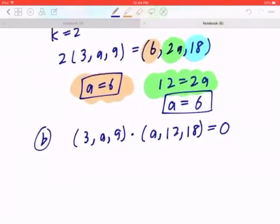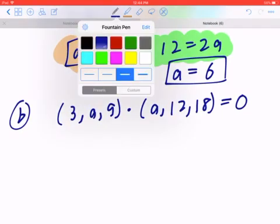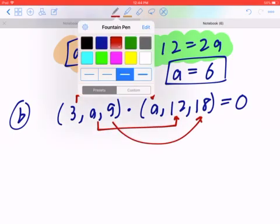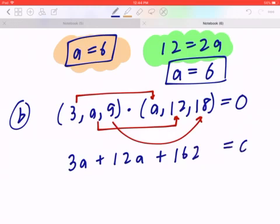And to find a, you expand this. You can use the arrows if you want to stay organized. There's the first part, there's the second part, there's the third part. So 3 times a, that's going to be 3a, plus a times 12, that's going to be 12a, 9 times 18, that's going to be 162, and this equals 0.